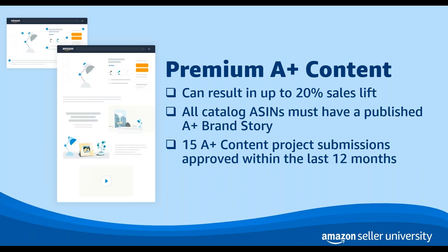According to a 2020 study, adding premium A-plus content to your listings can help increase your sales by up to 20% compared to having no A-plus content. To be eligible for premium A-plus content, you must have already published A-plus brand story content to all ASINs in your catalog that you have rights to via Brand Registry. You also have to have at least 15 A-plus content project submissions, separate from brand story, approved within the last 12 months. Premium A-plus enrollment occurs on a monthly basis for those who meet these criteria, and the criteria is determined on a per-country basis. Note that in some cases, it can take up to seven days for your premium A-plus content to be approved and appear on the detail page, so be sure to plan ahead.